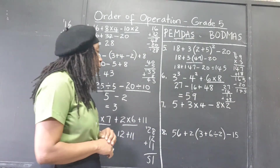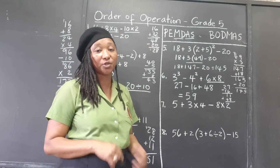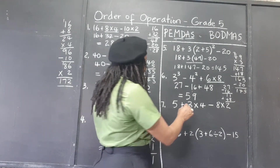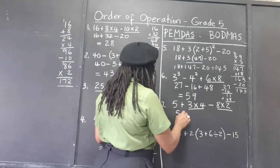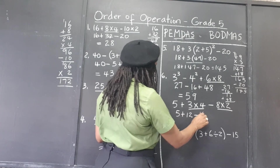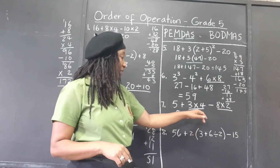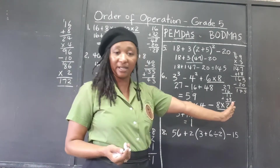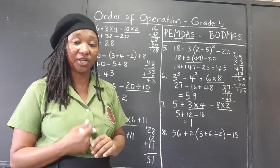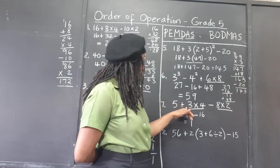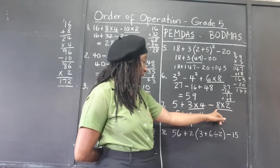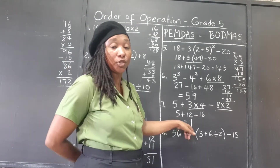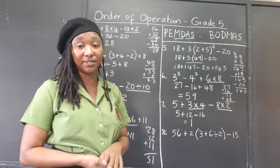For the next problem, we have two multiplication operations to work first. 3 times 4 is 12, and 8 times 2 is 16. So we have 5 plus 12, which is 17, and 17 take away 16 is 1. If we had gone straight left to right: 5 plus 3 is 8, times 4 is 32, minus 8 is 24, times 2 would give 48 — a completely different answer from 1. You absolutely must follow the rules.